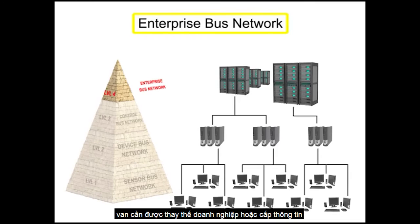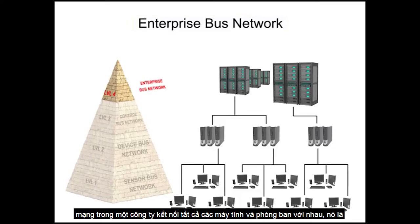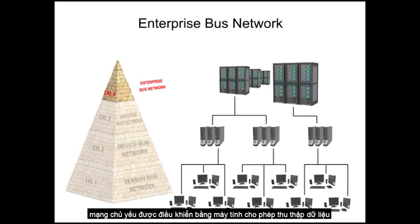The enterprise or information level network in a company connects all computers and departments together. It is the most overarching and complex of all the various network levels. This level of networking is primarily computer-driven, which allows for data collection and data monitoring.